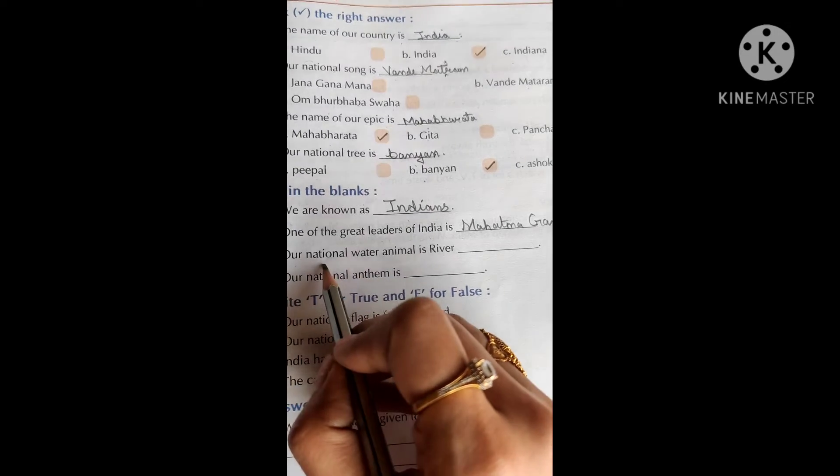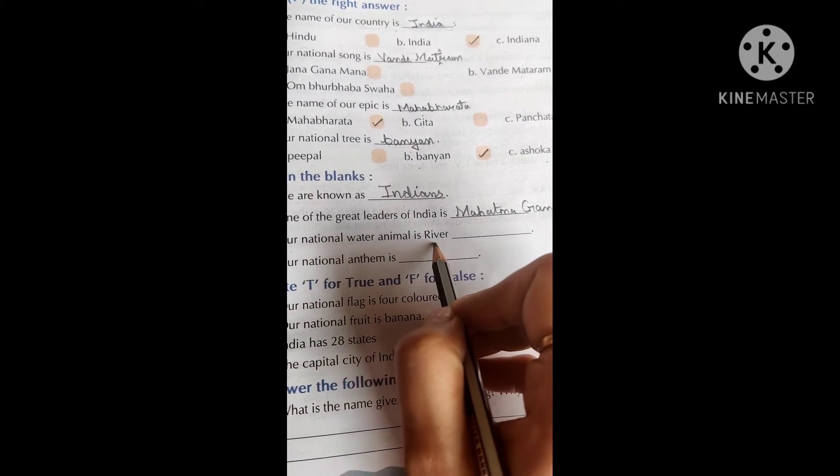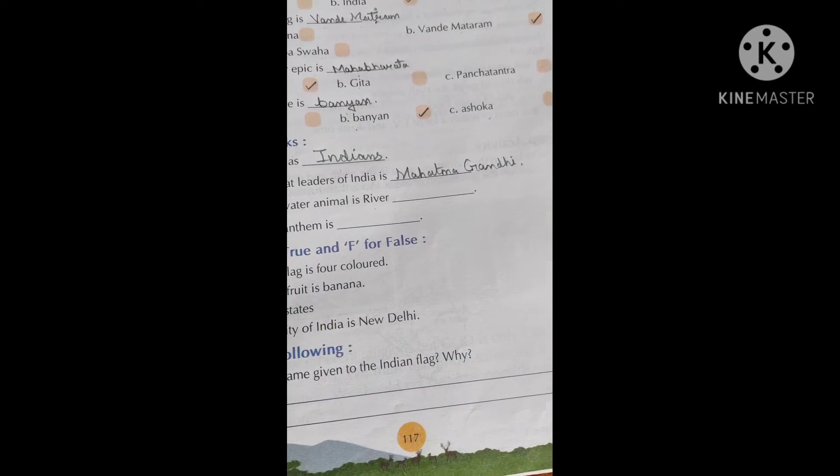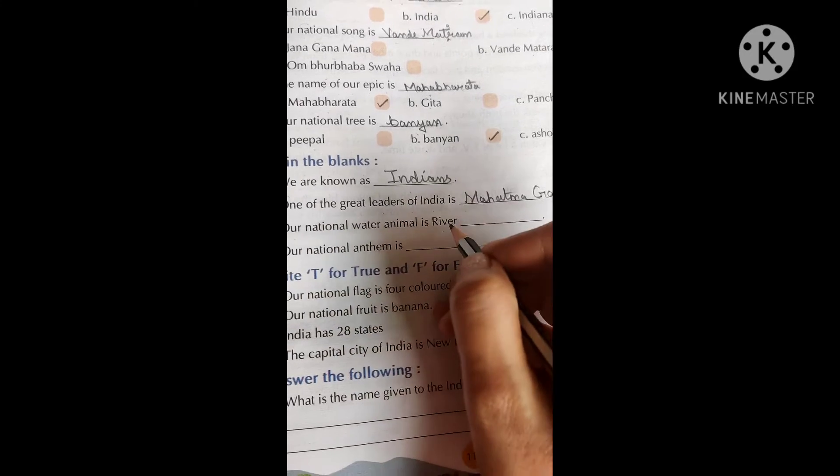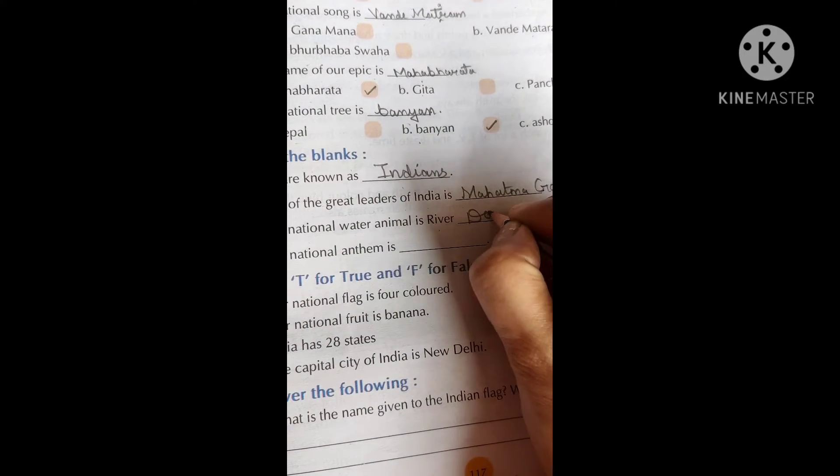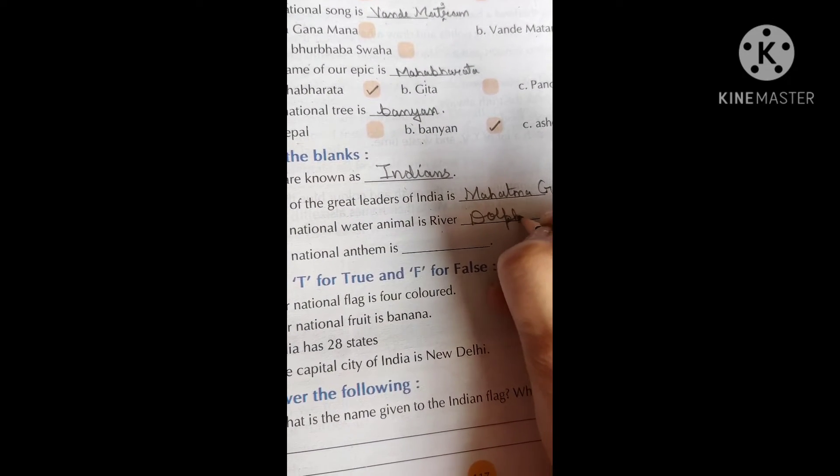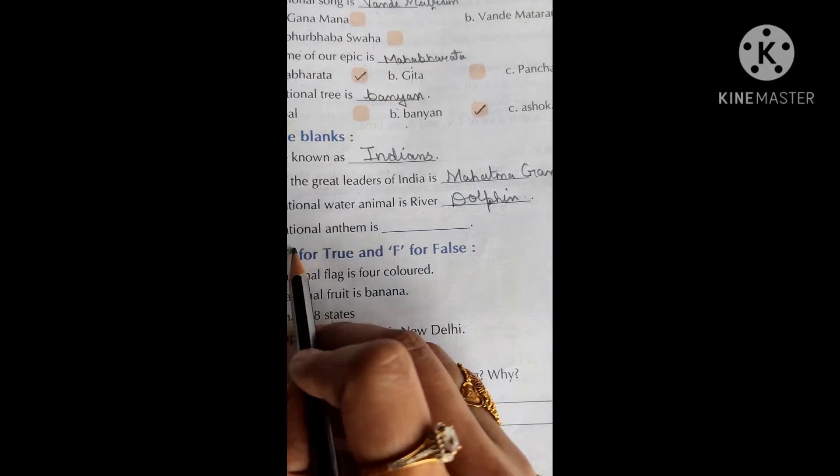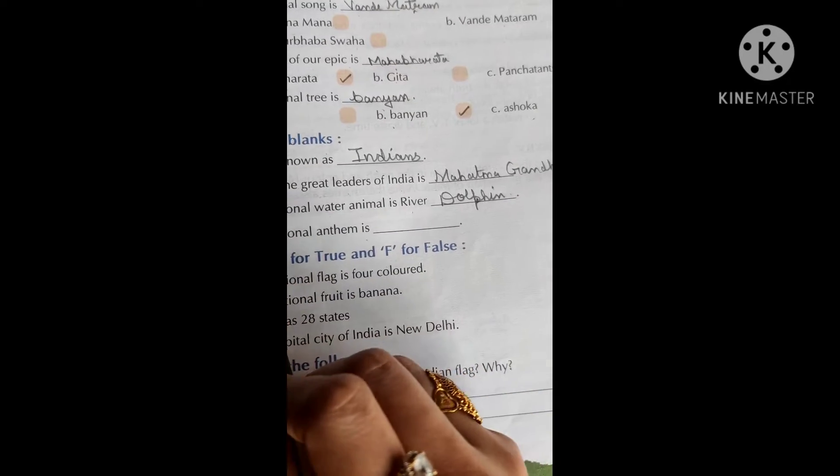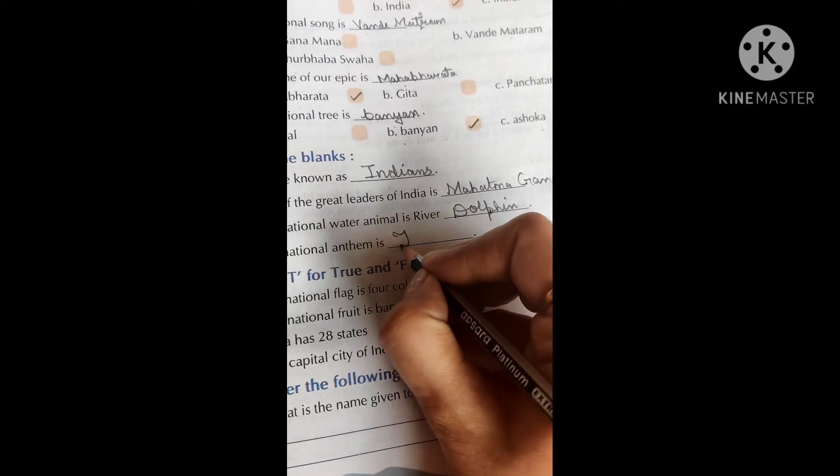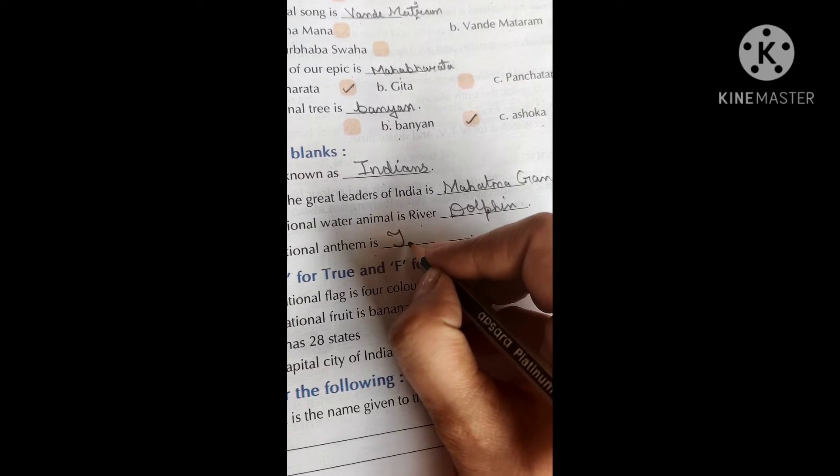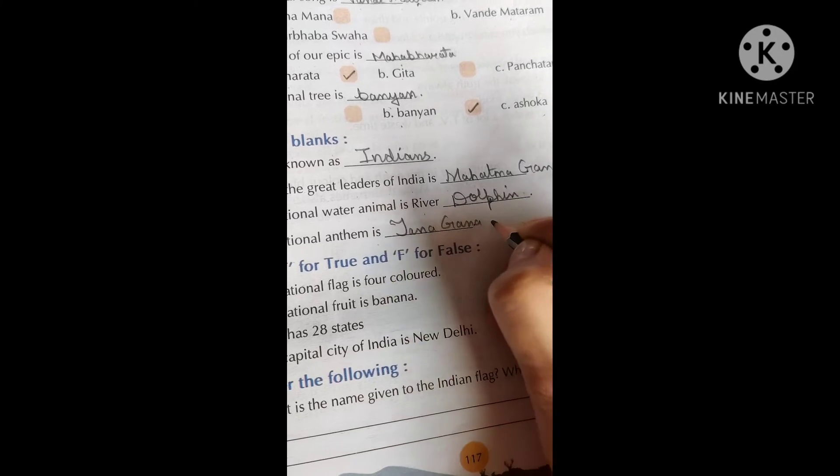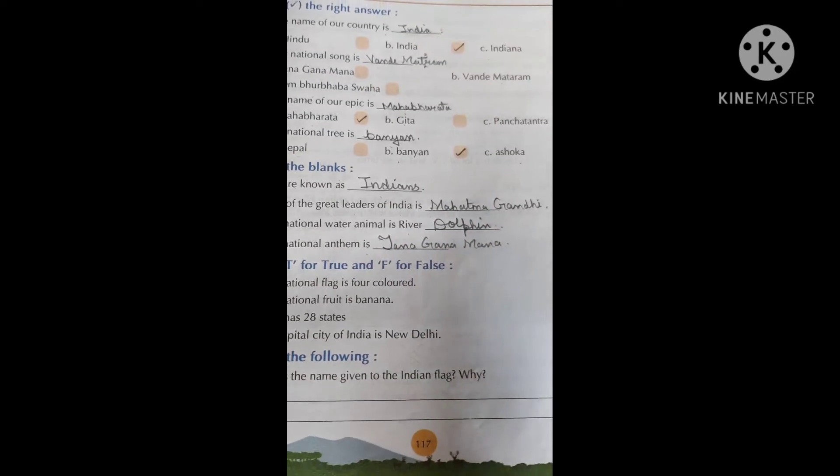Next is our national water animal is river water animal. Yes, it's our national water animal is river dolphin. Next, our national anthem is - which is our national anthem that we always sing in our assembly? It's Jan Ganaman.